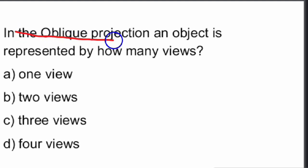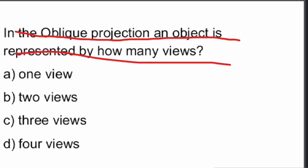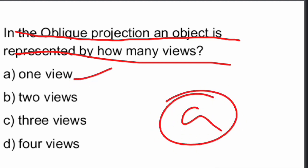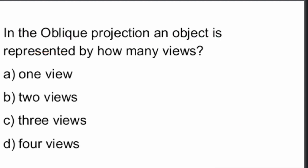First question: in oblique projection, an object is represented by how many views? In oblique projection, an object is represented by one view — a single view. Option A.